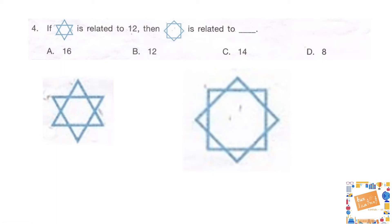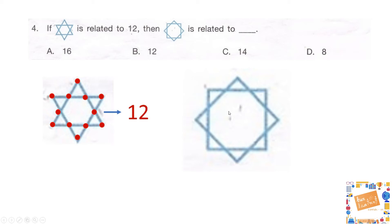Let's see how this should be solved. If you look at the star figure and count its vertices — that is, the corner points — 1, 2, 3, 4, 5, 6, 7, 8, 9, 10, 11, and 12 — it has 12 vertices or corner points. Applying the same approach to the other figure gives us 16, so our correct answer is option A — 16.